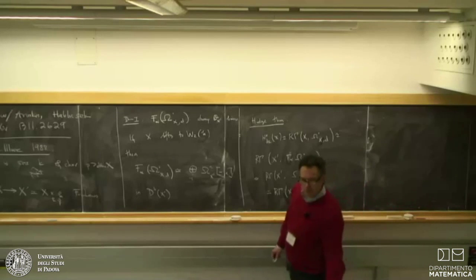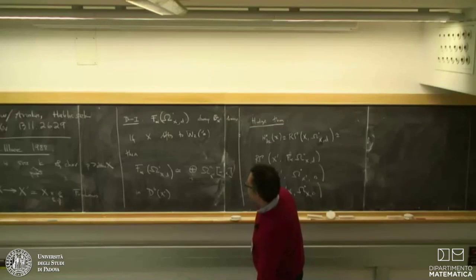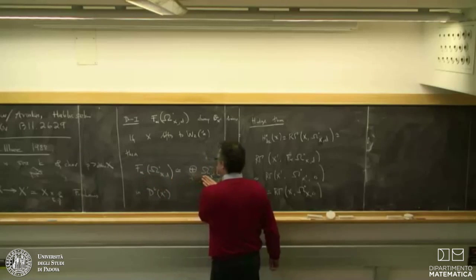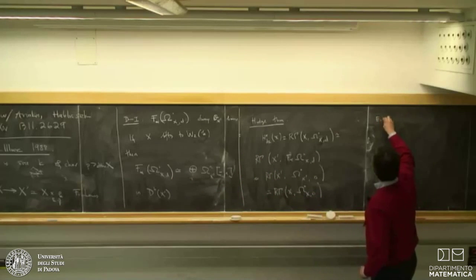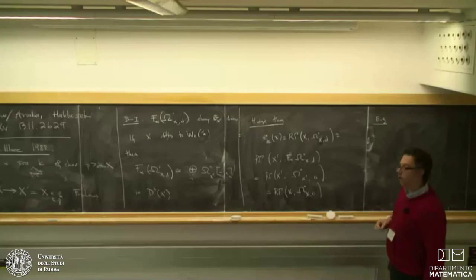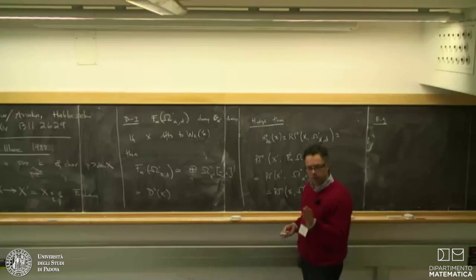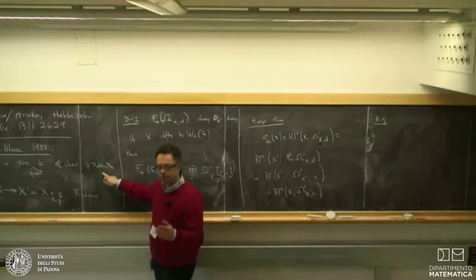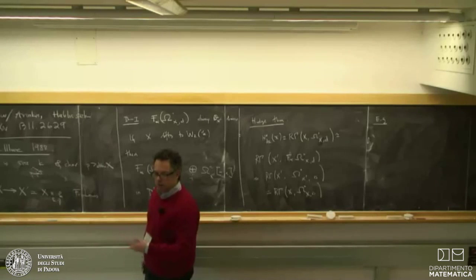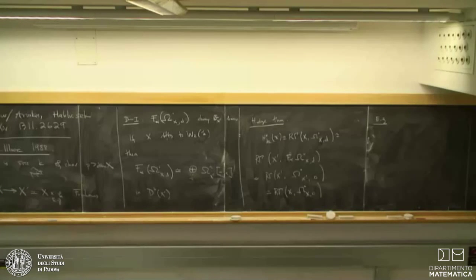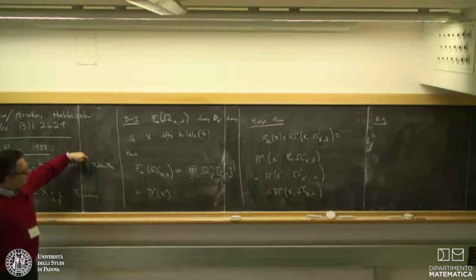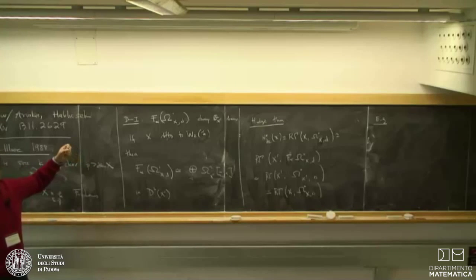Let me give an explicit example since many people here are not familiar with characteristic p methods. If X = A^1, then O_X = k[x]. The relative Frobenius is a map from X to X′ where O_{X′} can be identified with k[x^p], and this map is given by the inclusion k[x^p] ↪ k[x]. The de Rham complex looks like k[x] → k[x]dx with f ↦ f′dx. There is a general principle: if you can prove a map vanishes for all p sufficiently large, it vanishes in characteristic zero.